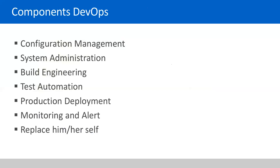There was also a production deployment person - usually the configuration management person - and a monitoring guy whose job was just to look at the screen, create monitoring scripts, and make sure everything was running. As a DevOps person, your job is to wear multiple hats and replace all of them as a single person. That's the reason for the higher pay - but you're also doing five people's jobs simultaneously.